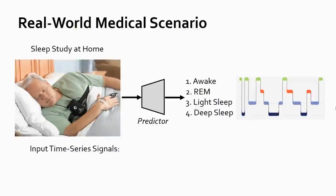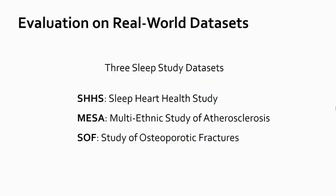To further evaluate our methods in real-world scenarios, we consider the problem of sleep study at home, where the input is time series signals from the patient's nasal cannula and breathing belt. A predictor such as a neural network will take in these signals to predict the corresponding sleep stage, which is one of the four classes: awake, REM, light sleep, and deep sleep. We use three real-world medical datasets, SHHS, NASA, and SOF. These datasets contain subjects of different ages, where age can be a domain index. Therefore, we can use CIDA to adapt across continuous domains.